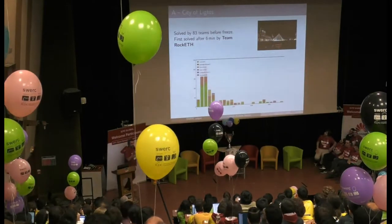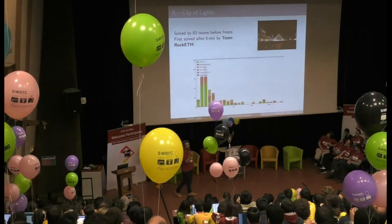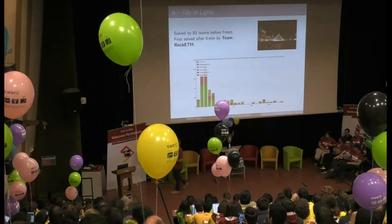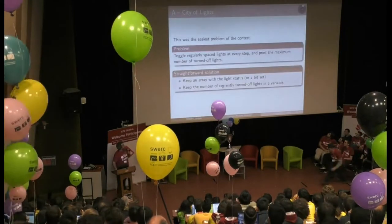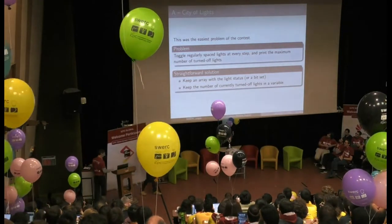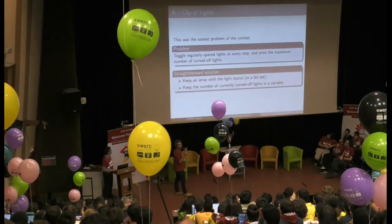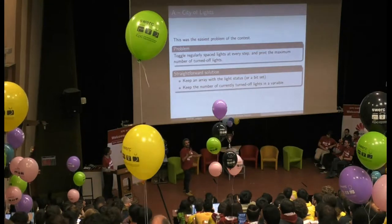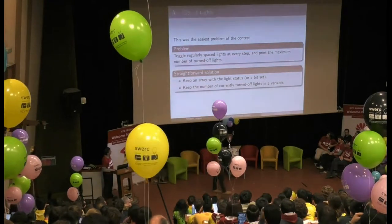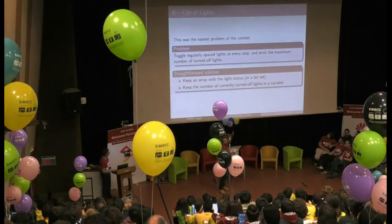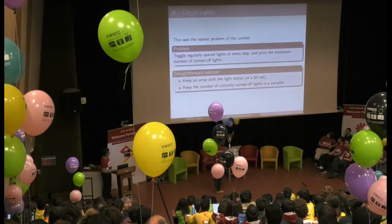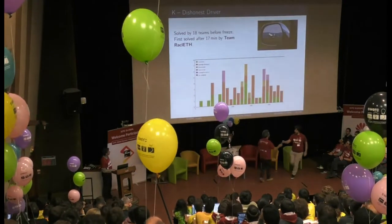The simplest problem was City of Lights — there are a lot of pink balloons here. The first team took only six minutes to submit a working solution, and almost all teams were able to solve it. The idea was to have an array or a set with a list of lights, their state, toggle them — for example, toggle every three lights — and keep a count of lights on or off. By updating the count as you turn lights on or off, you get the answer.